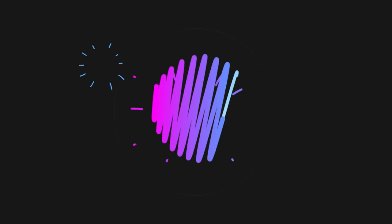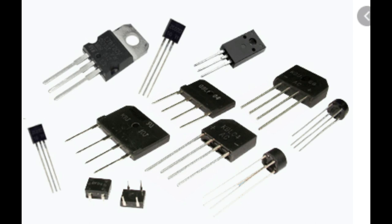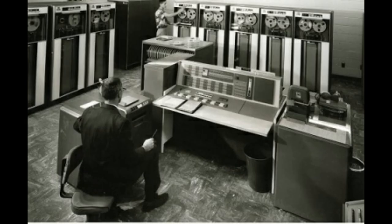Second generation, 1956 to 1963: the electronic technology used was transistors. Power consumption was less when compared with first generation computers. The size of the computer was smaller when compared with the first generation. Execution speed was measured in microseconds, though it still cost a lot for purchasing.